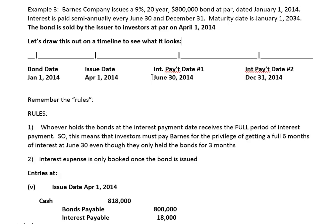For the investor to get a full six months of interest on June 30th — that is from January 1st to June 30th — they're going to have to pay up front for three months, from January 1st to April 1st. So for the investor to get a full six months interest, even though they've only been holding the bond since April 1st, which is three months, they've got to pay three months up front: January, February, and March.